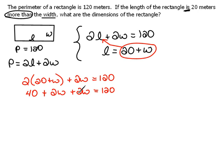We add like terms, we'd get 40 plus 4W equals 120. If we subtract 40 from both sides, we get 4W equals 120 minus 40 would be 80. And then dividing both sides by 4, we would get W equals 20.